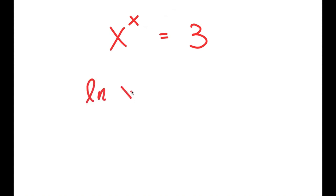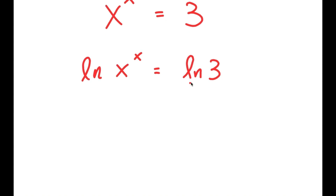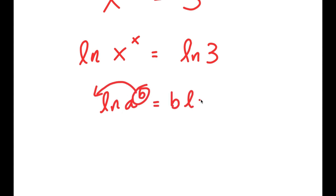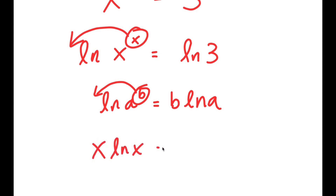So I get ln of x to the power of x is equal to ln of 3. Now, an important property of logarithms is that if I have something in the form ln a to the power of b, I can move this exponent b to the front, so this turns into b times ln a. So in this case, I have ln x to the power of x, and I can move x to the front. So I get x times ln x is equal to ln 3.